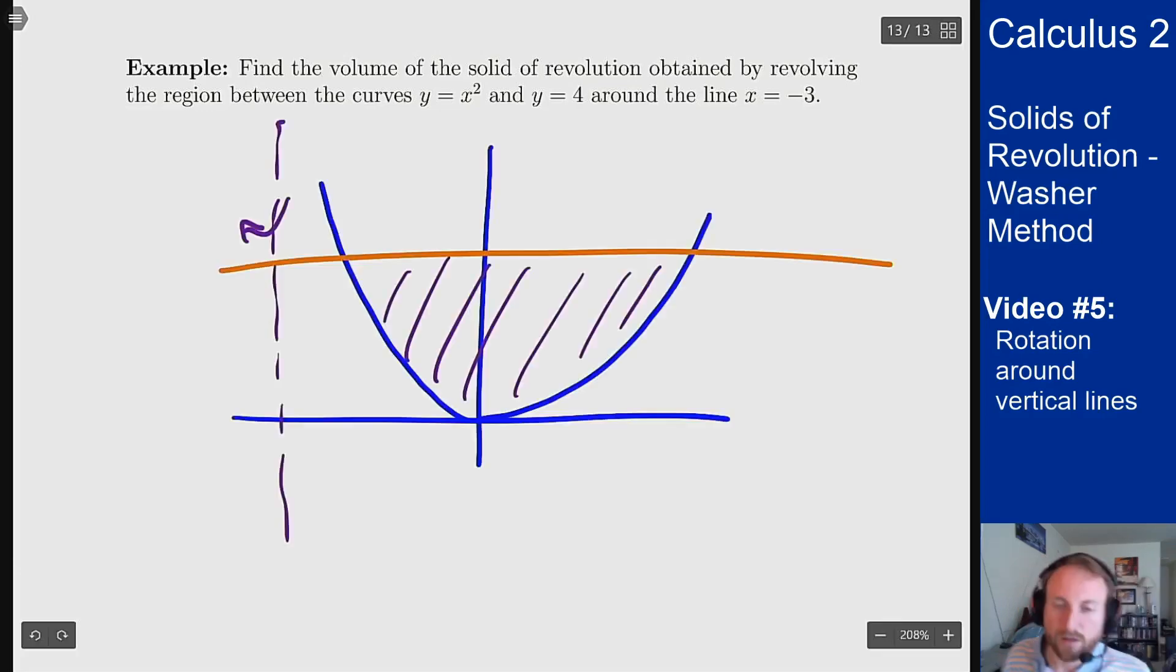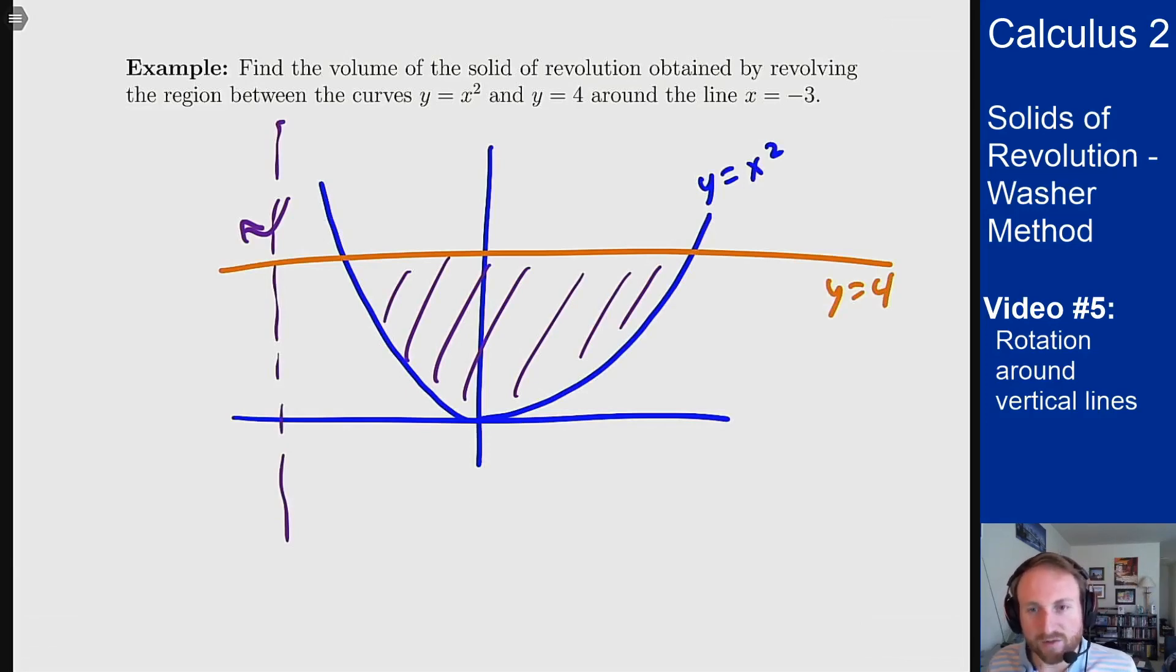Let's draw the picture and see what this looks like. Here's the image you want to think about. There's our parabola y equals x squared, there's the line y equals 4, and I'm revolving around the vertical line x equals minus 3.